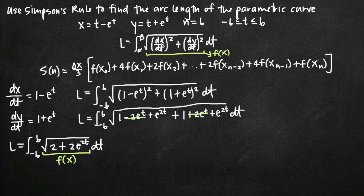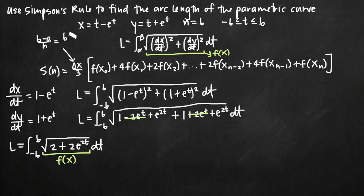The first thing we want to do for Simpson's rule is find delta x, which equals b minus a over n. Here b is the upper limit of integration, positive 6, and a is the lower limit, negative 6. So we get 6 minus negative 6 divided by 6, which is 12 over 6, which equals 2. So delta x is 2.